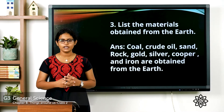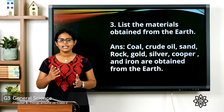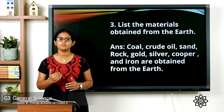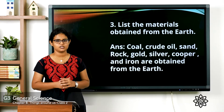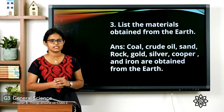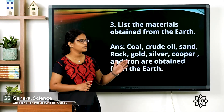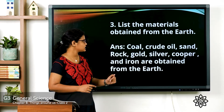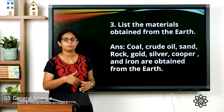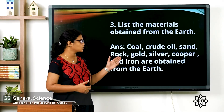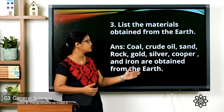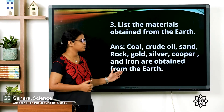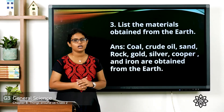Question three — list the materials obtained from the earth. Coal, crude oil, sand, and rock are obtained from the earth. Metals like gold, silver, copper, and iron are also obtained from the earth.